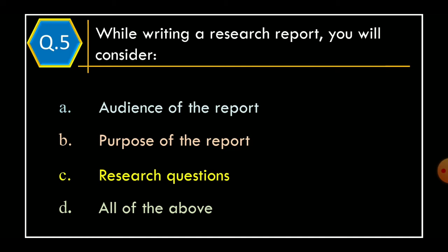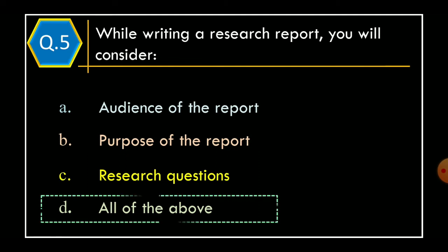Question 5: While writing a research report, you will consider — Option A: Audience of the Report. Option B: Purpose of the Report. Option C: Research Questions. Option D: All of the Above. The correct option is Option D, All of the Above.